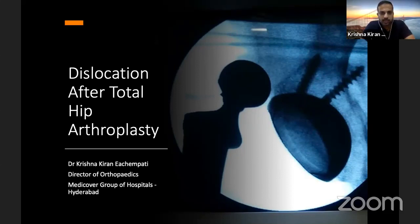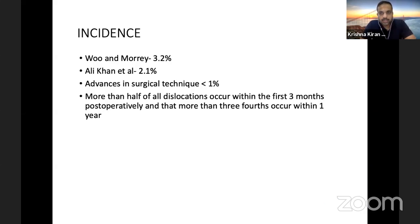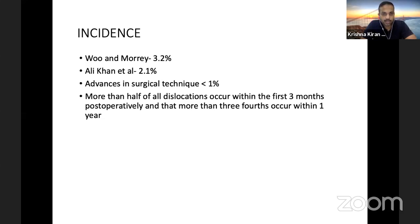Thank you, Hitesh. Good evening, everyone. Today we will talk about dislocation after total hip arthroplasty. The incidence of dislocation has been variable, but by and large it's been reported between 2% and 3% for primary total hip arthroplasty. Advances in surgical technique, like augmentation of the posterior capsular repair, have now brought about a reduction in dislocation to less than 1% in most series. More than half the dislocations occur within the first three months and more than three-fourths within the first year. It's an early and catastrophic complication for both patient and surgeon.